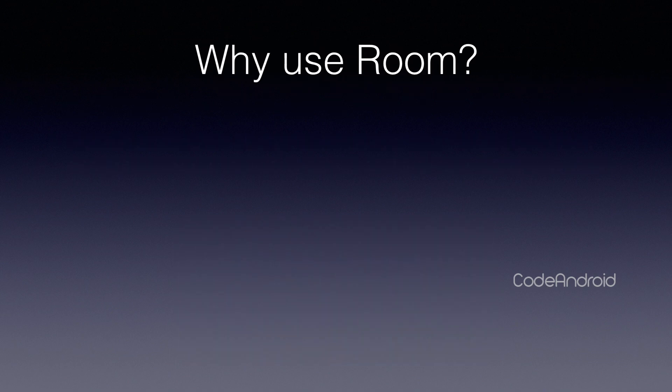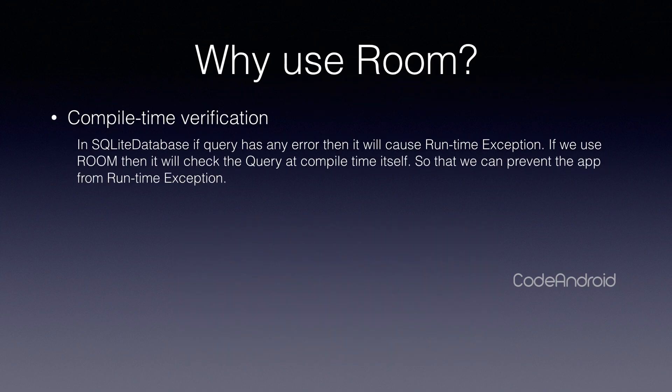Why do we need to use Room Database? Compile Time Verification. In SQLite database, if the query is wrong, it will cause a runtime exception, because Android Studio won't do any validation while building the app. But when we use Room Database, the queries are validated at compile time, so it will give the error message while typing the query itself.